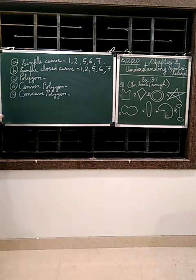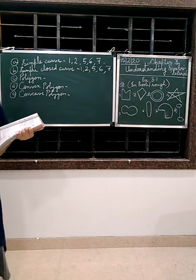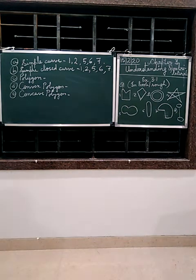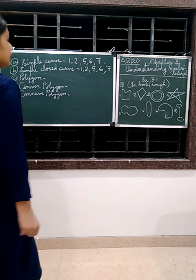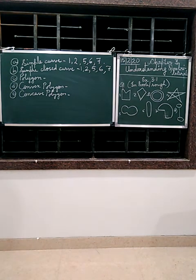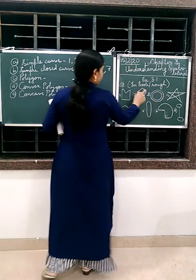Then polygon. So what is a polygon? Which are made up of line segments. So you can see what are made up of line segments? 1 and 2.